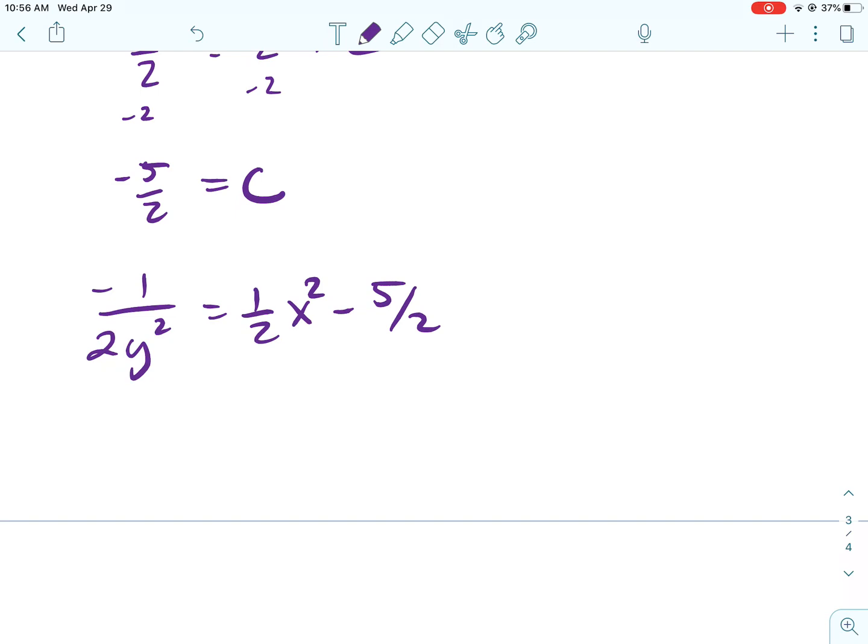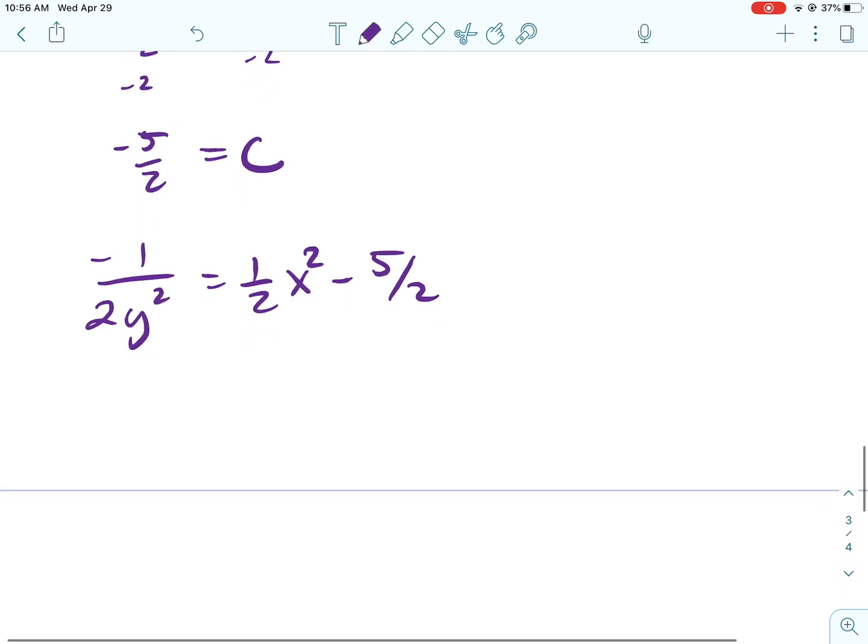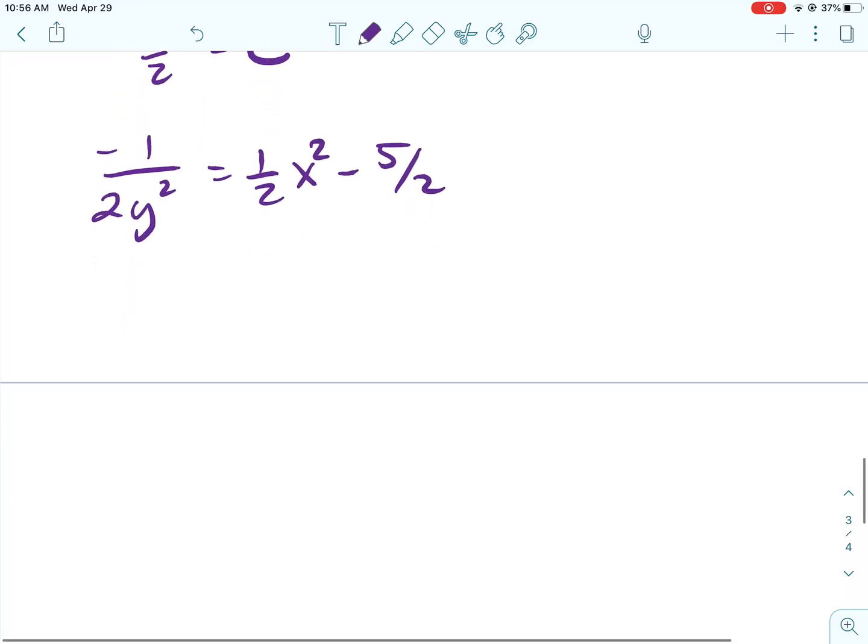All right, and then I'll put it right back in. I'm also going to rewrite this a little bit. So, it's going to be negative 1 over 2y squared equals 1 half x squared minus 5 halves.